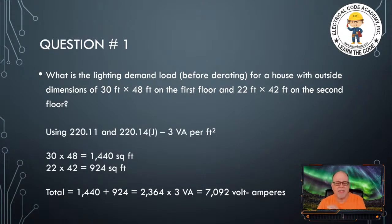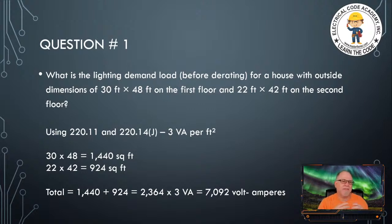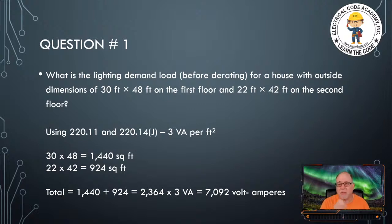The code tells us that 220.11 — which is new for the 2020 edition of the NEC — contains rules that used to be in 220.12. It gives you the rules on how to calculate your dimensions and floor area square footage. Where did the 3VA for dwellings go from 2017 to 2020? It used to be in 220.12's general lighting table, but it's been moved to 220.14J.